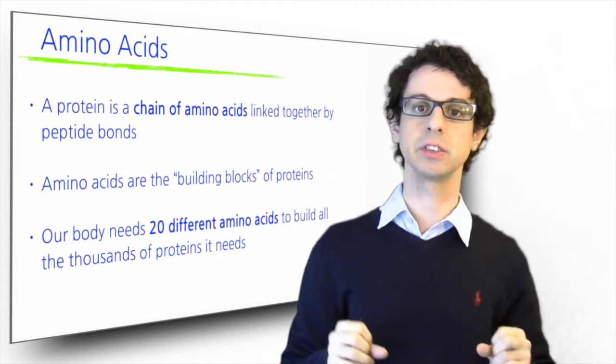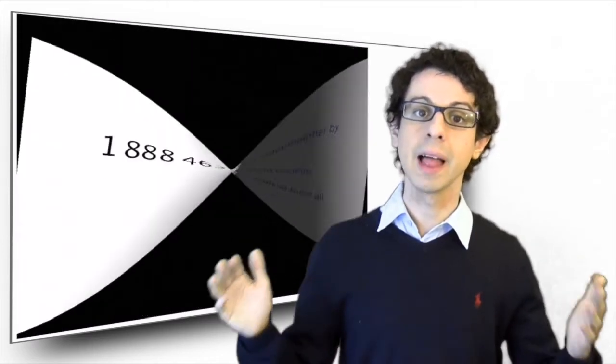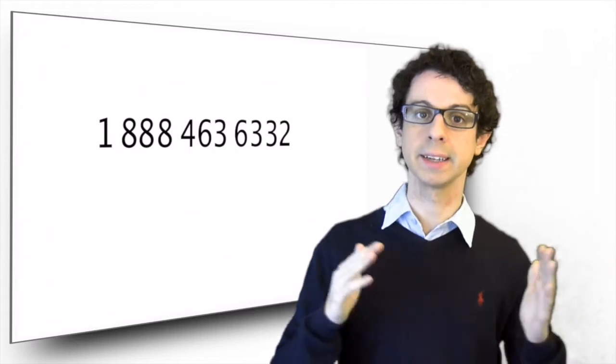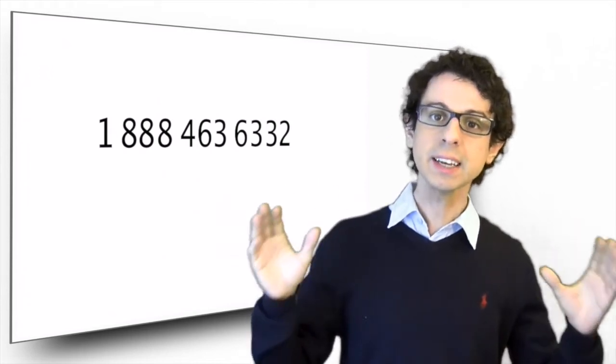If we combine three of these digits to make 9-1-1, we call emergency. If we combine 11 of them to make 1-888-463-6332, we call the Food and Drug Administration. But if we take these same 11 digits and combine them in a different way, say 3-2-8-3-1-8-3-6-4-6-8, we would be calling somewhere in France.